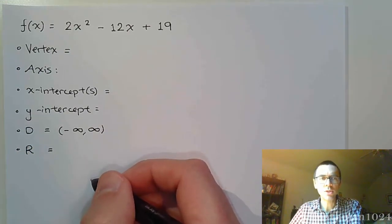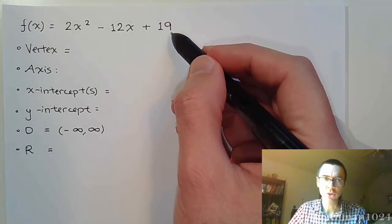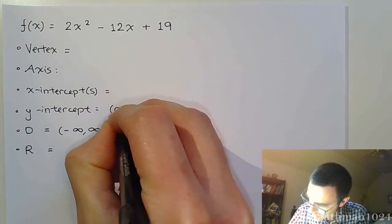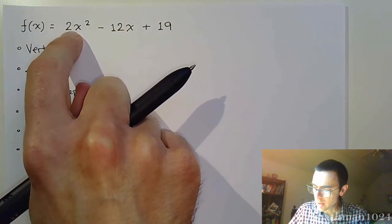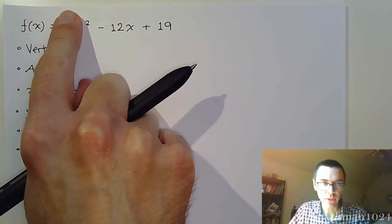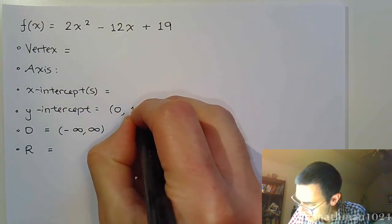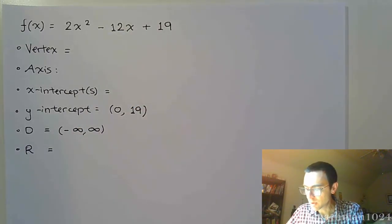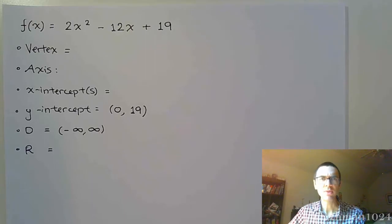The y-intercept really should be the easiest thing for us to find, because this quadratic function is in the general form. So the y-intercept is going to be 0 comma something. And if you plug in 0, that gives you 0, minus 12 times 0 is gone, and you have 19. So we have 0, 19 for a y-intercept. That's going to be kind of a problem when it comes to graphing because that's not going to fit. So let's try to figure out everything else.